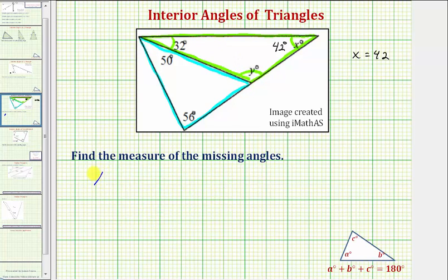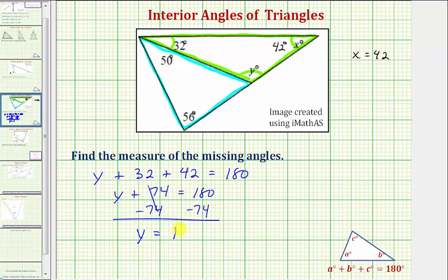And therefore y plus 32 plus 42 must equal 180. So solving for y, we have y plus, well 32 plus 42 is equal to 74. And subtracting 74 on both sides and simplifying, we have y equals 180 minus 74 is equal to 106.